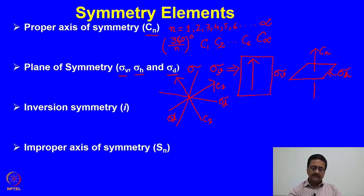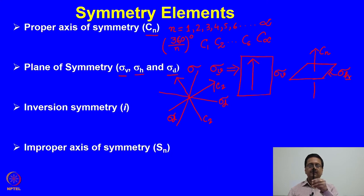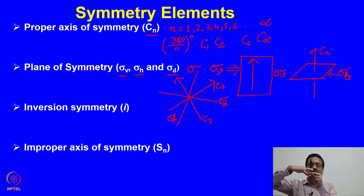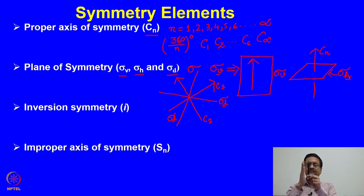The terminology v and h comes from the concept of vertical and horizontal. When we consider the principal axis of a molecule, we consider it to be perpendicular to the earth — so it is vertical. The mirror plane passing through the principal axis is therefore a vertical plane, called σv. Any plane perpendicular to this vertical axis is a horizontal plane, called σh. So σh is perpendicular to the principal axis and horizontal to the earth's surface, while σv is perpendicular to the earth's surface.